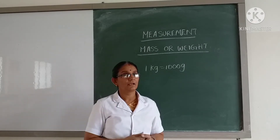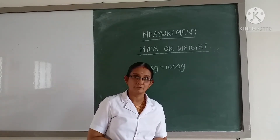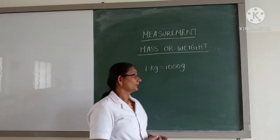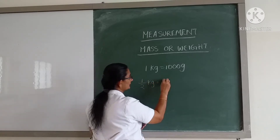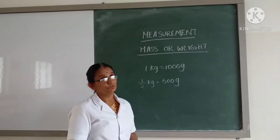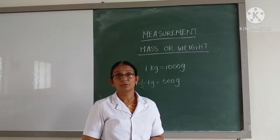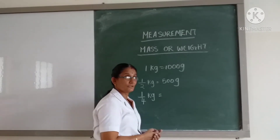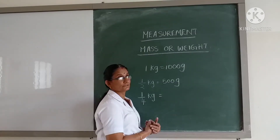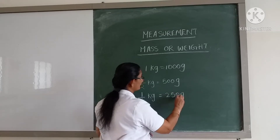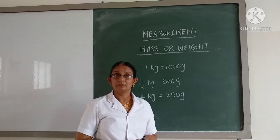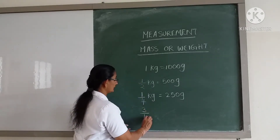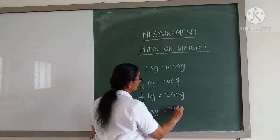In the previous video we learned that half of a kilometer equals 500 meters. In the same way, half of a kilogram is equal to 500 grams. One-fourth of a kilometer is equal to 250 meters, so one-fourth of a kilogram is equal to 250 grams. Three-fourths of a kilometer equals 750 meters, so three-fourths of a kilogram is also equal to 750 grams. There is only a change in the units.